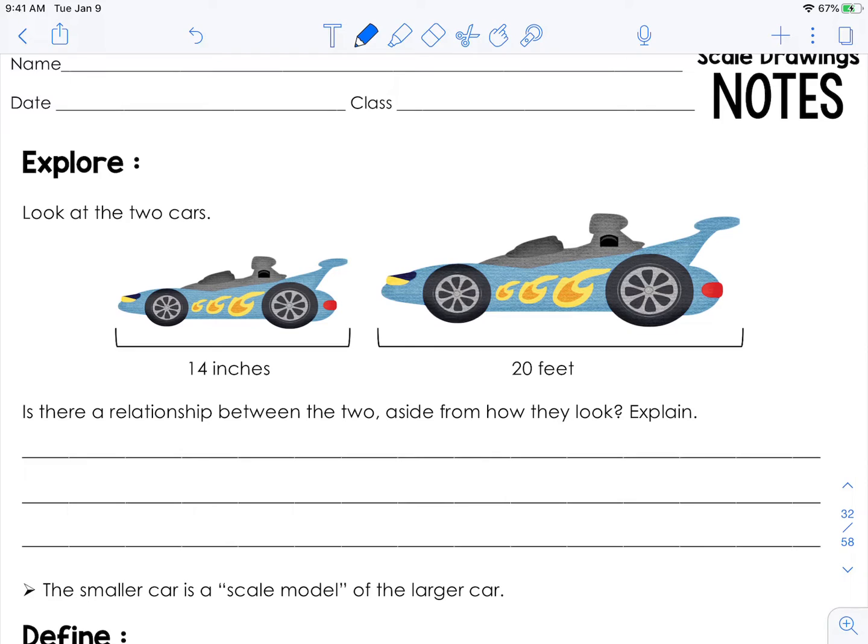If you look at the tires, they seem to have been shrunk by the same size, the flames on the side. So we would be able to call these cars proportional.